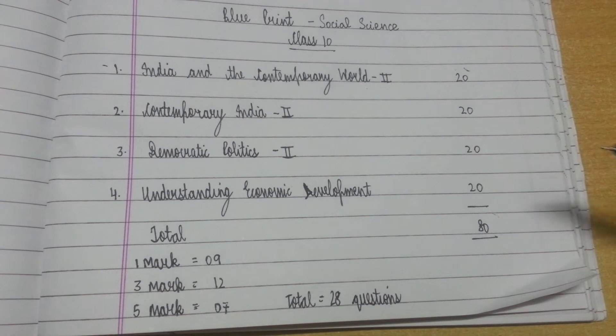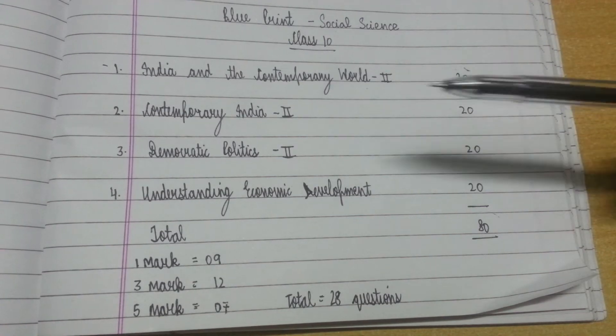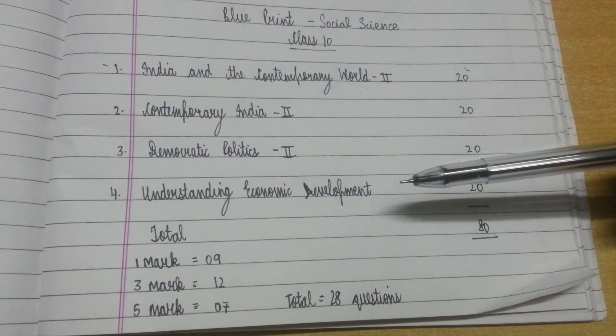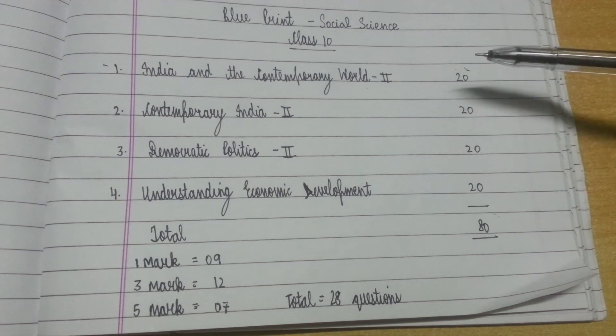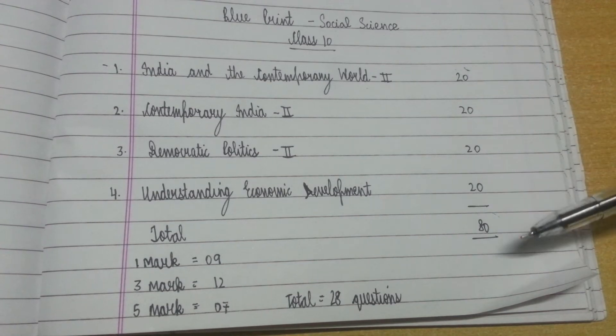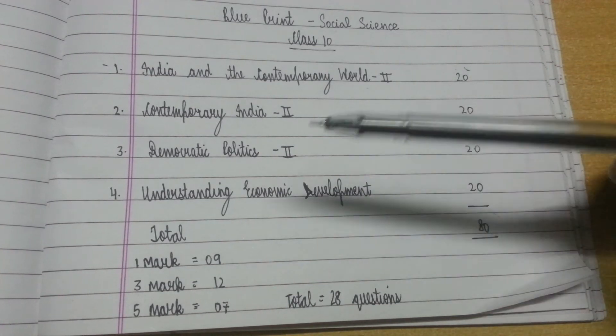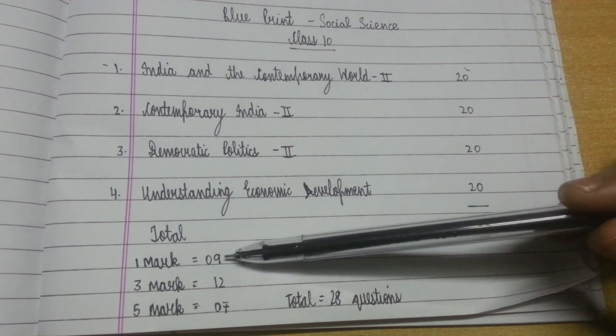From Geography, History, Civics, and Economics, you are going to get questions for 20 marks each. You are going to get 9 questions for 1 mark, 12 questions for 3 marks, and 7 questions for 5 marks.